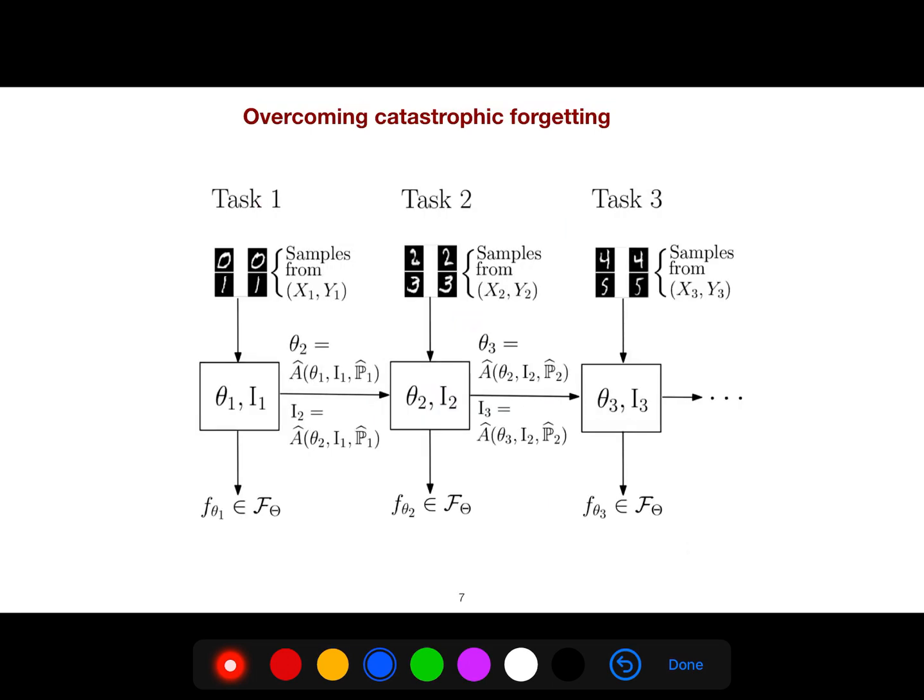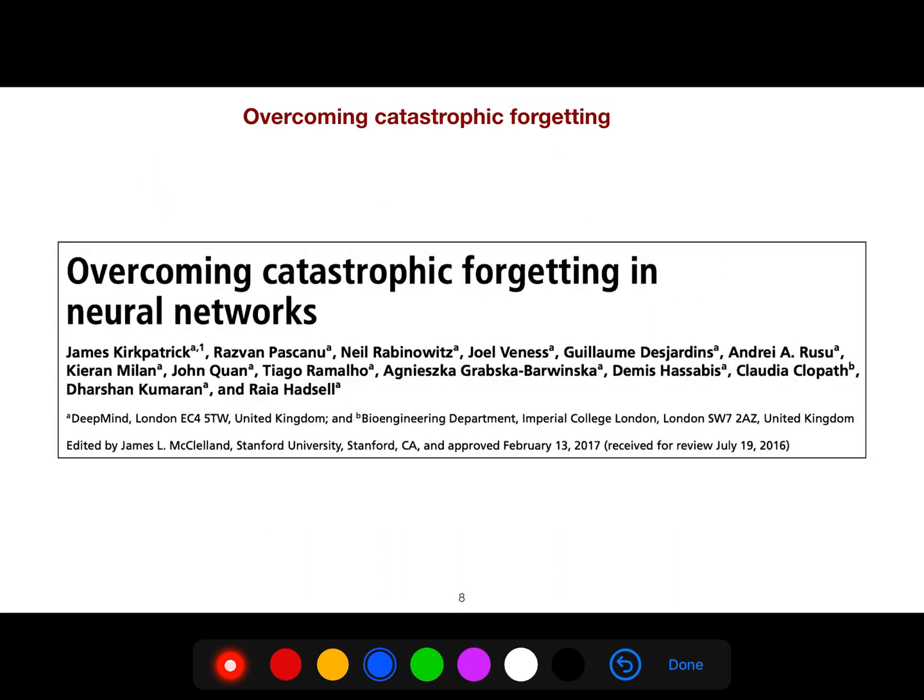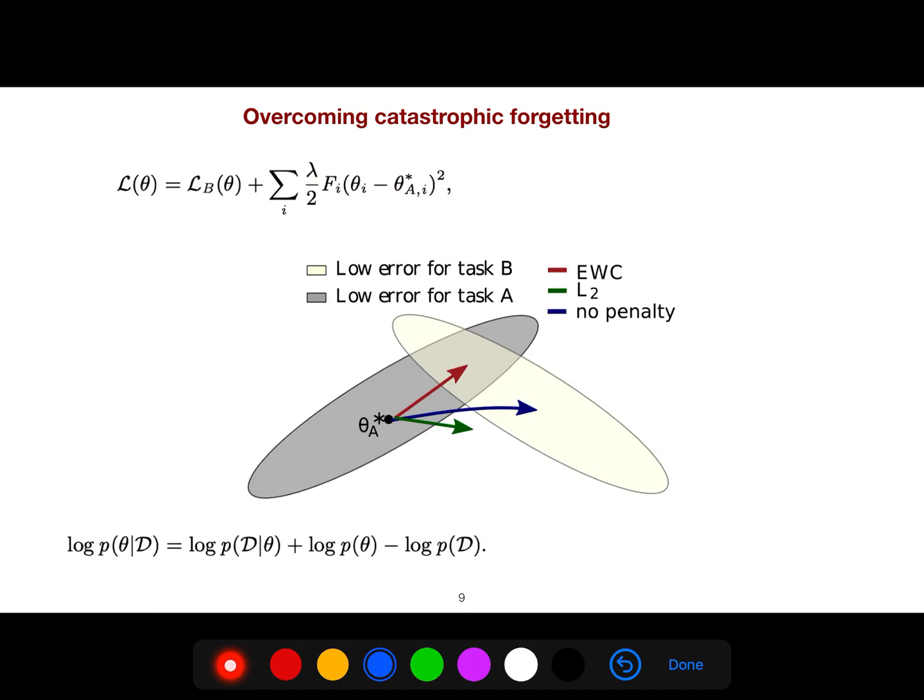And a simple example is MNIST. For example, task one, you just learn zero and one. In task two, you learn two other digits, and so on. And this is a very nice article. It is a very classical article that everything started by this article, I say.